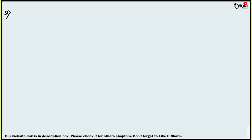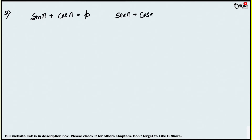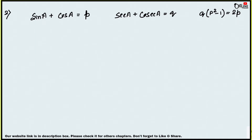In question number 2, if sin a + cos a = p and sec a + cosec a = q, then prove that q(p² - 1) = 2p. You have to show that q(p² - 1) = 2p. So first, write down the LHS.